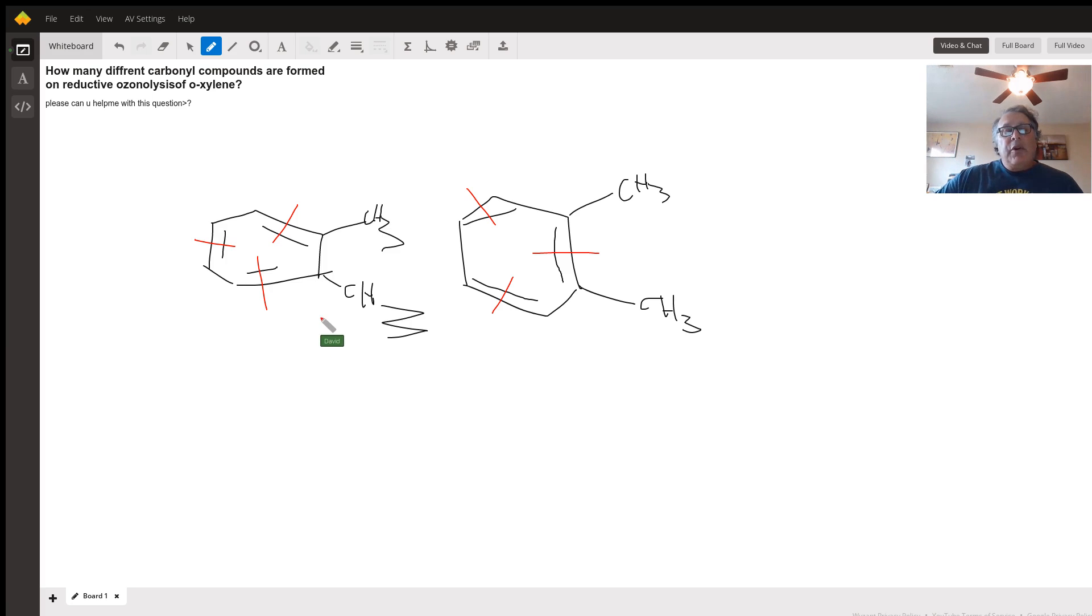So all of these cleavages are taking place. So let's ask the question, which carbonyl compounds come from the cleavage of the resonance form on the right? And so the answer is going to be, and I'll try to do this in the same orientation.